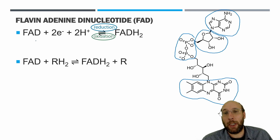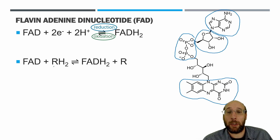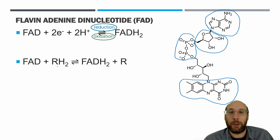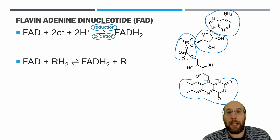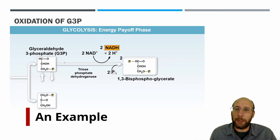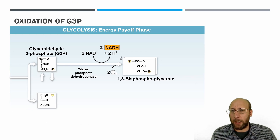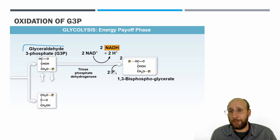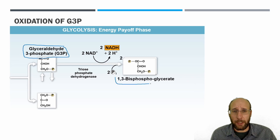FAD reacts with glucose, gets those electrons and hydrogens from the sugar, and becomes FADH₂, while the sugar is released. This is showing the oxidation of G3P — one of the stages of glycolysis. We start with G3P, and what forms from it is 1,3-bisphosphoglycerate.